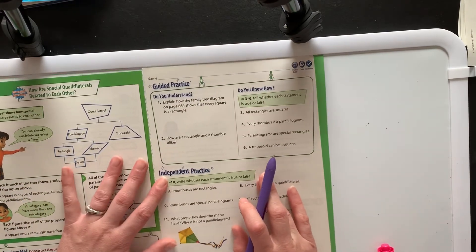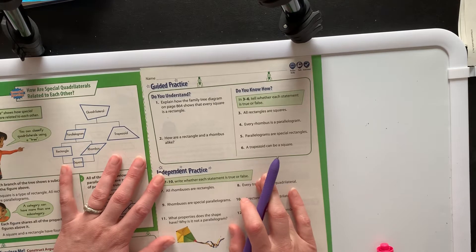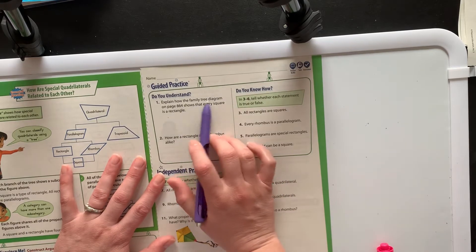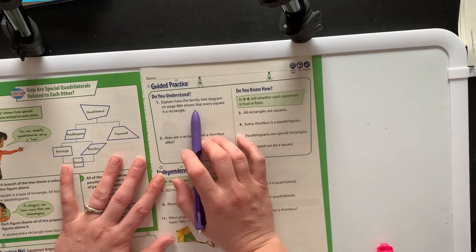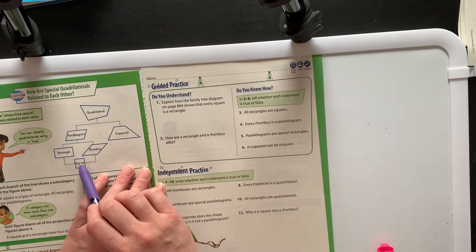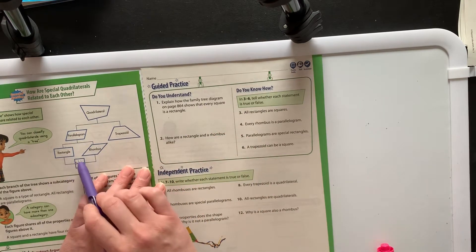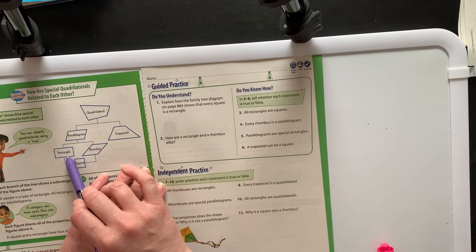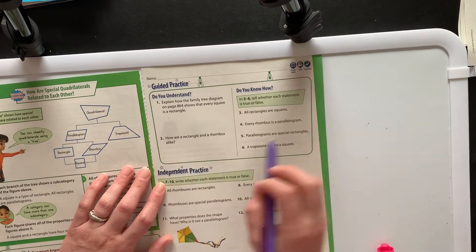So what we need to do here is explain how the family tree diagram on page 684 shows that every square is a rectangle. So we can just kind of follow it up. Every square is also a rectangle because it has two sets of parallel lines and four right angles, which is all you need to be a rectangle. So that would be the answer there.